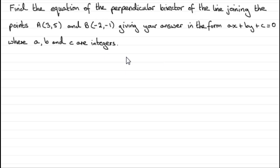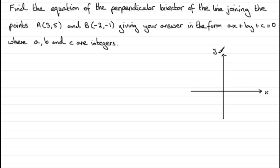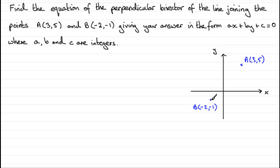So to do something like this, first of all I would draw a sketch. I'd draw a sketch graph purely because it will give me an idea of what's going on. It will also tell me if my answers look sensible. So we've got two points here — A at (3, 5), so 3 across, 5 up. I never really mark the scales on — you don't have to, it's just to give you a rough idea of what's going on. B is at (-2, -1), so 2 across that way, 1 down. So we've got a line joining A and B.